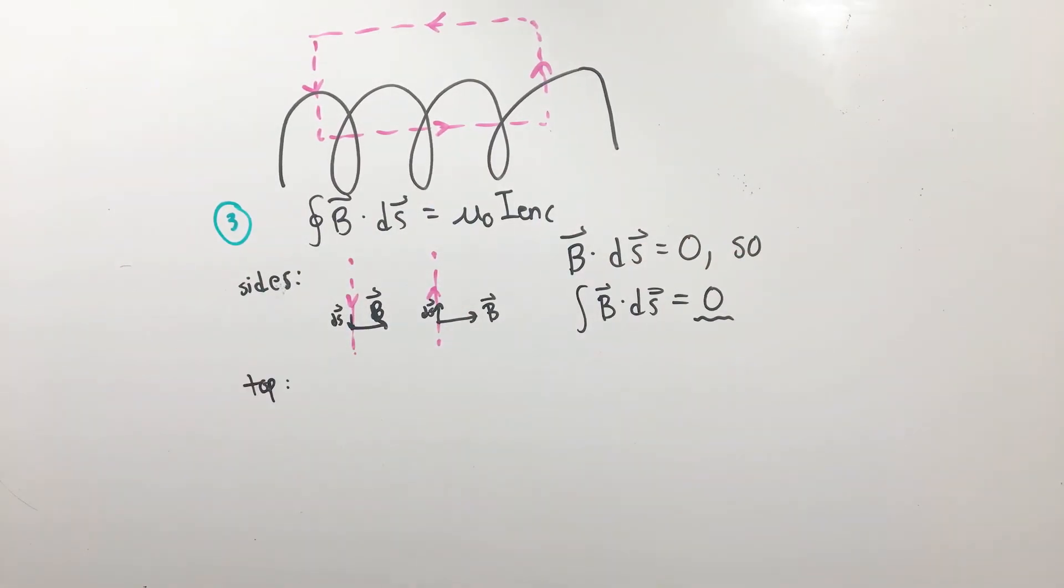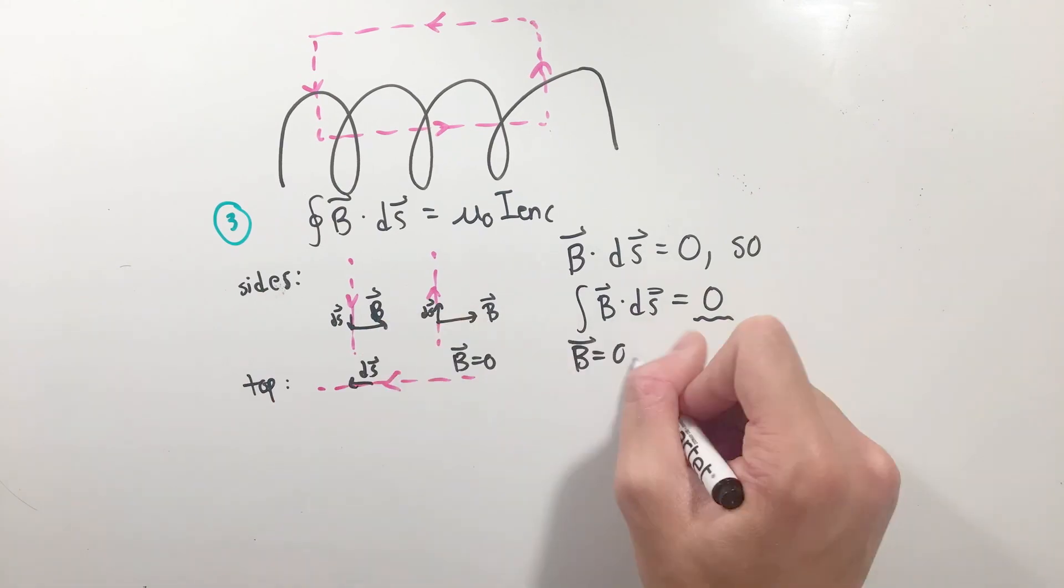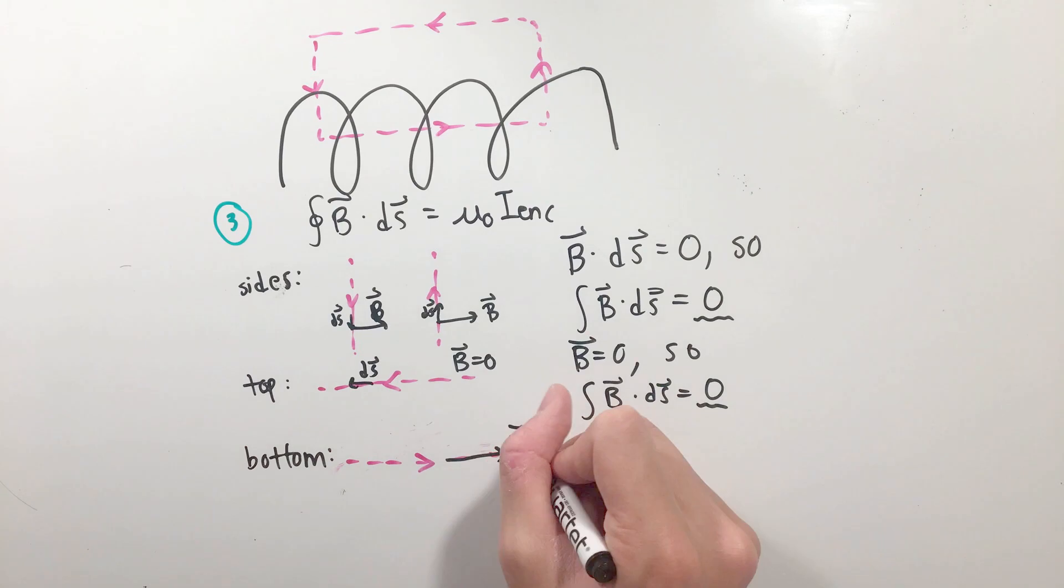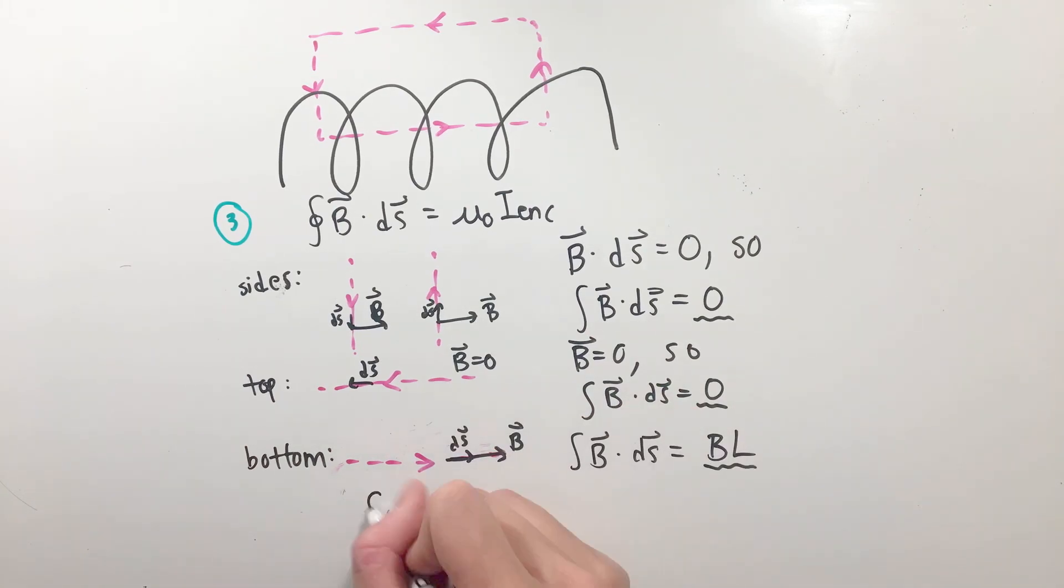Similarly, because the top side has no magnetic field created outside, the integral along the top edge will also become zero. What we're left with is a simple line integral that allows us to find the magnetic field inside of a solenoid.